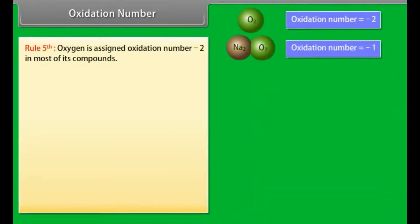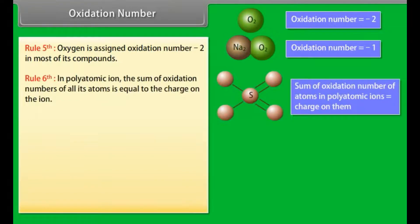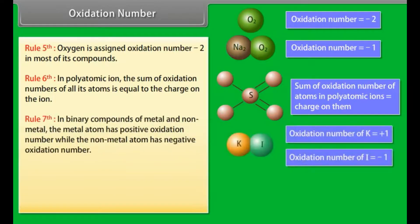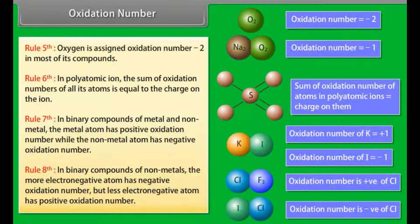Rule 5 — oxygen is assigned oxidation number −2 in most of its compounds. Rule 6 — in a polyatomic ion, the sum of oxidation numbers of all its atoms is equal to the charge on the ion. Rule 7 — in binary compounds of a metal and non-metal, the metal atom has a positive oxidation number while the non-metal atom has a negative oxidation number. Rule 8 — in binary compounds of non-metals, the more electronegative atom has a negative oxidation number, while the less electronegative atom has a positive oxidation number.